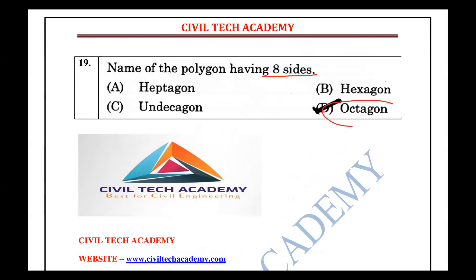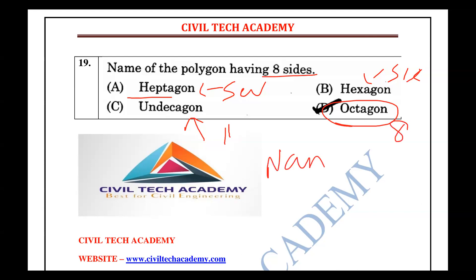Octagon has 8 sides. Heptagon has 7 sides. Hexagon has 6 sides. Undecagon has 11 sides. Decagon has 10 sides. Nonagon has 9 sides. This table helps you identify polygon names by their number of sides.